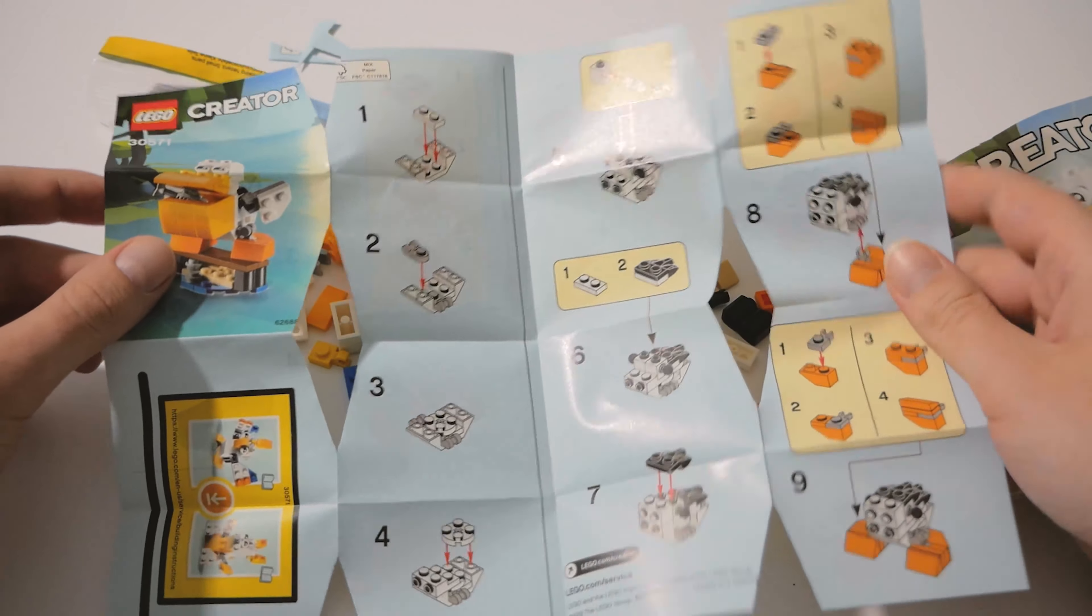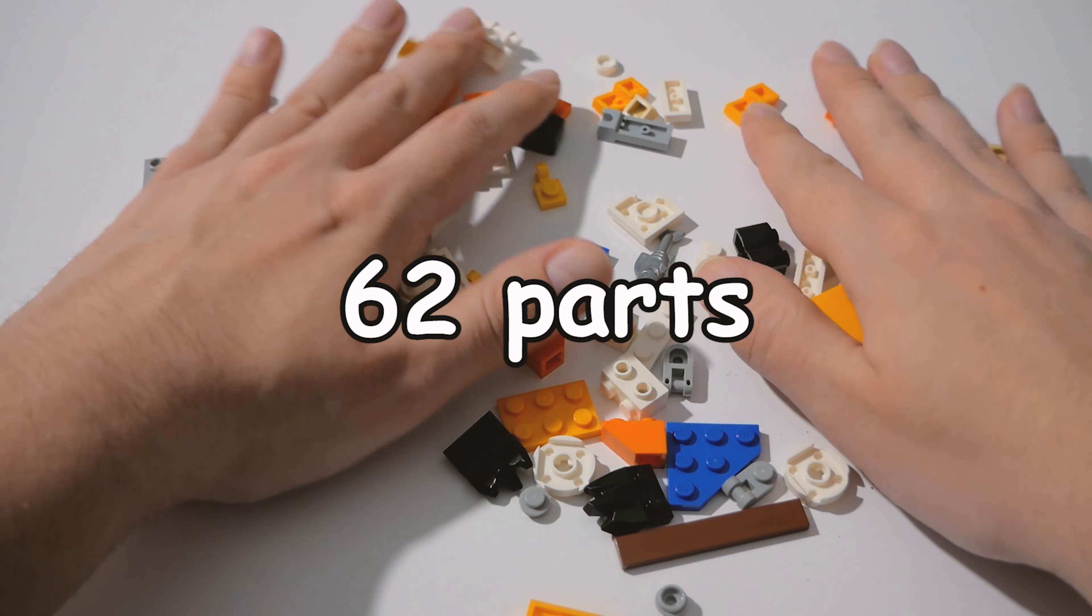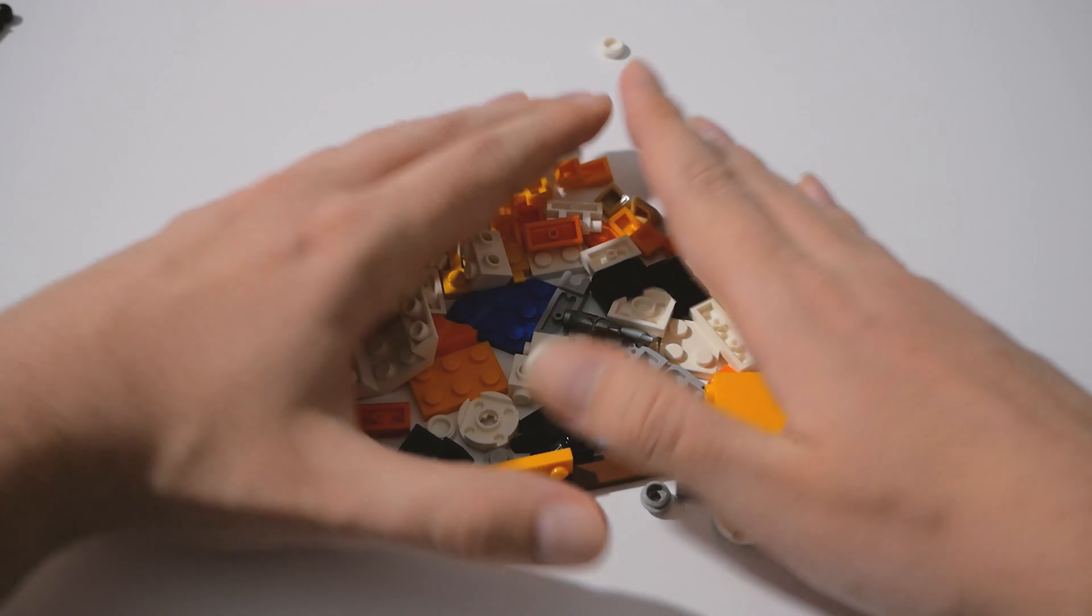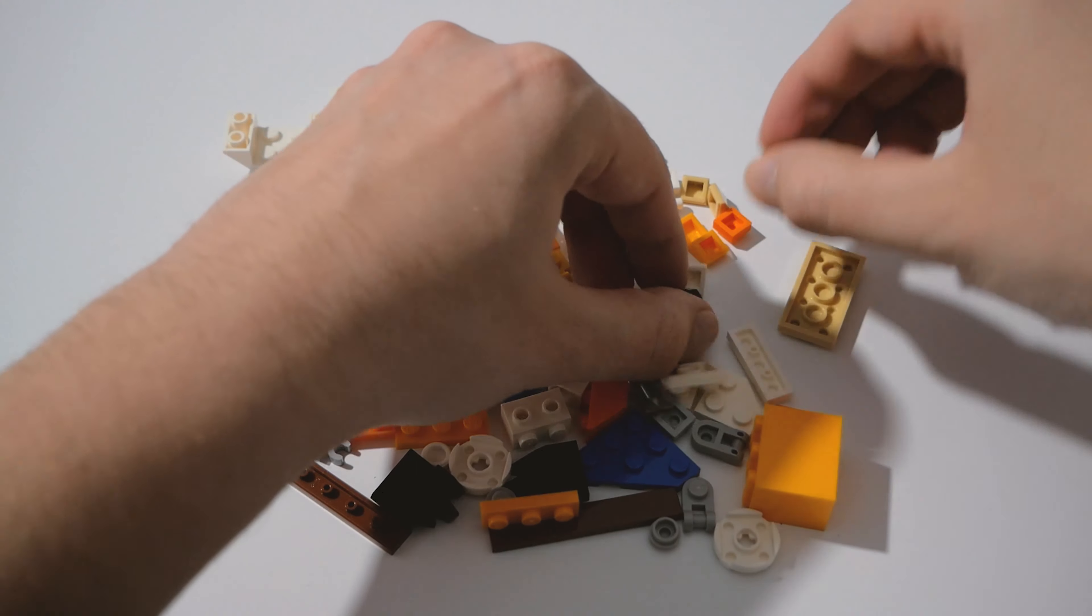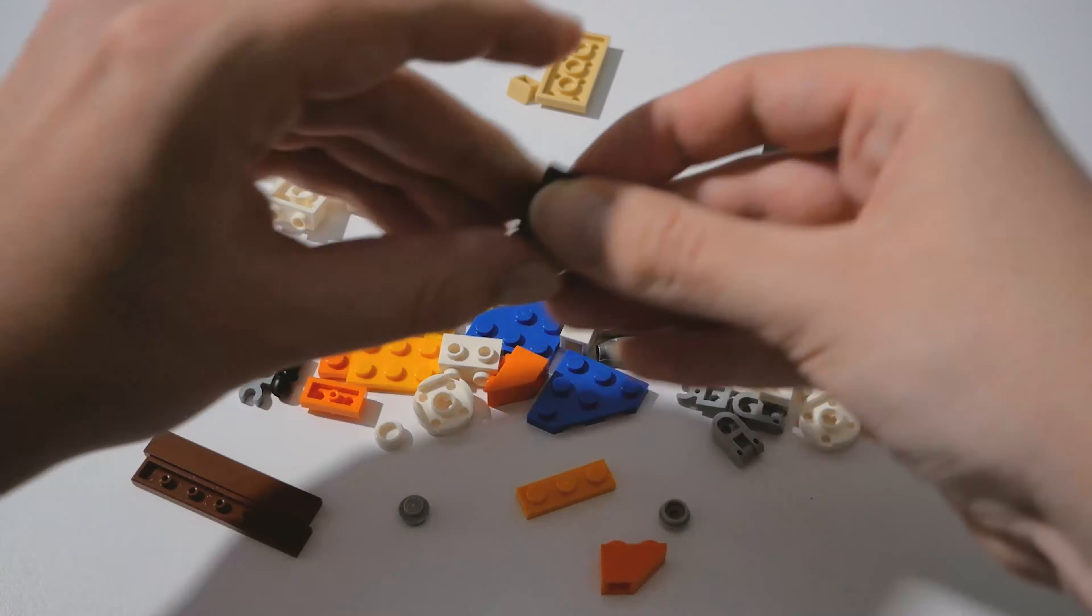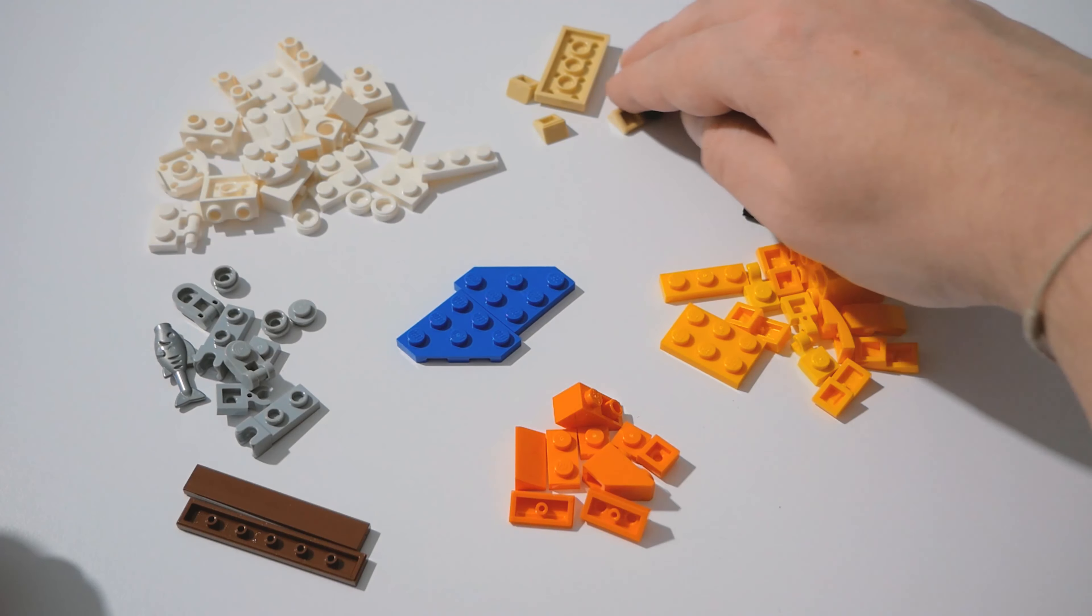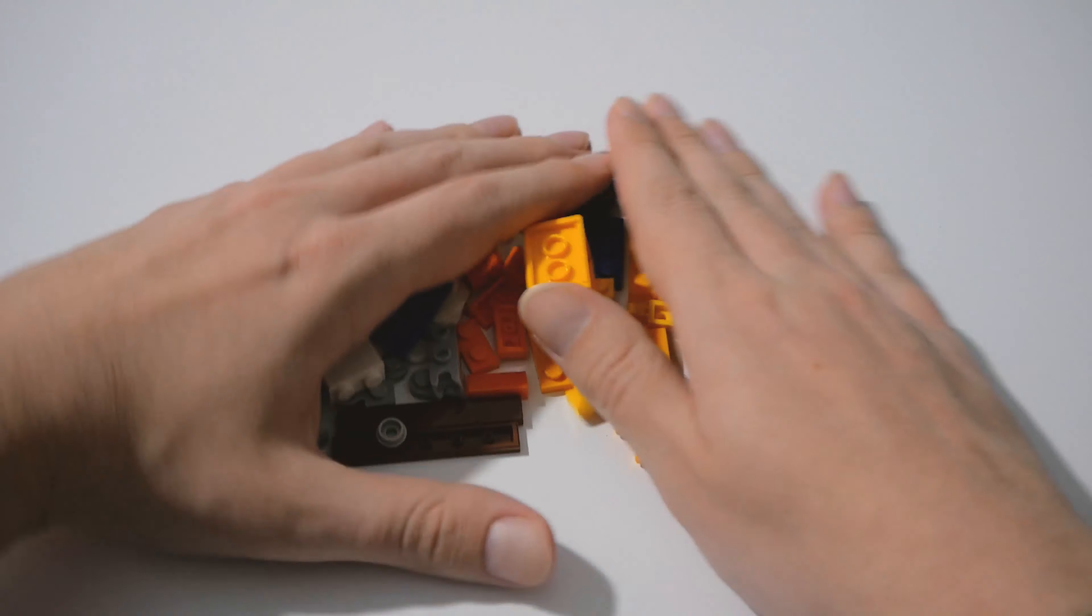This LEGO model has 62 parts. Try not to lose any of them, they are all very small, better keep them together like that. The first step is to sort them by color, like the white, gray, and orange and yellow and blue. Maybe it's not important and you don't need to sort them, just use the instruction manual.